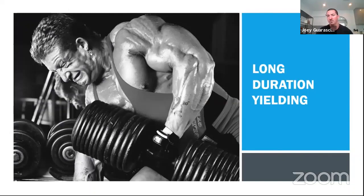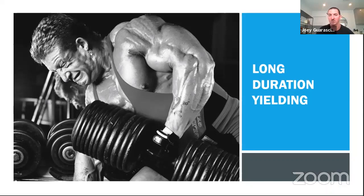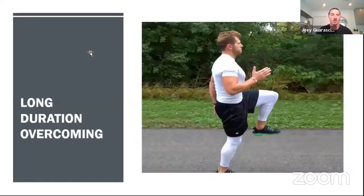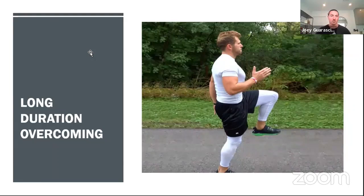For long duration yielding: many muscles in the back are actually slow-twitch in nature because they support posture throughout the day. To train those in a slow-twitch manner, use long duration yielding exercises — bat wing holds via bent row, barbell row, or pull-ups. This matches the training stimulus to the fiber types being trained. For long duration overcoming, we use the iron ankle series from Chris Corfus — getting in a hole position, pushing up strong, and then you can overload these, but as you overload, the inverse relationship applies and duration decreases.